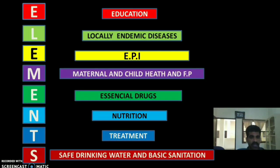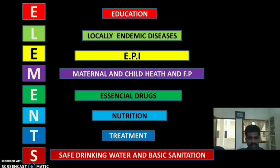To recap: E stands for Education, L for Locally endemic diseases, E for Expanded program on immunization, M for Maternal and child health including family planning, E for Essential drugs, N for Nutrition, T for Treatment, and S for Safe drinking water and basic sanitation.